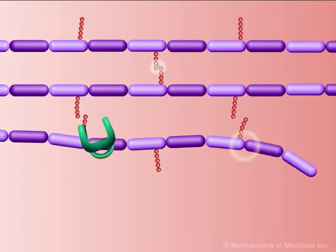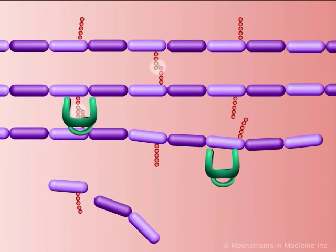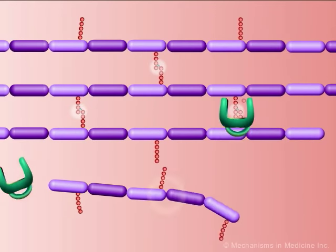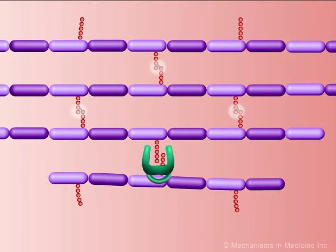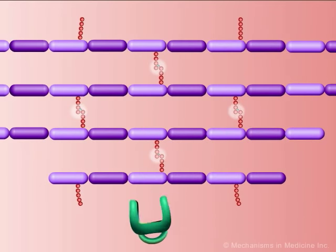Eventually, several layers of peptidoglycan are formed, all of which are cross-linked to create the cell wall. Gram-positive bacteria may have more layers than gram-negative bacteria and thus have a much thicker cell wall.